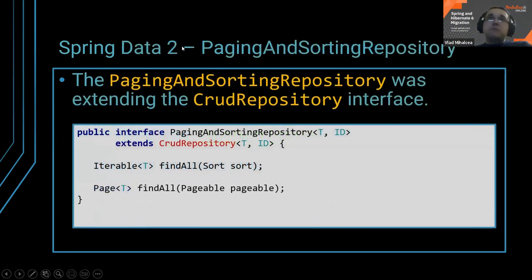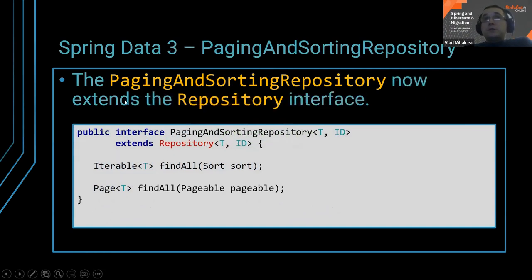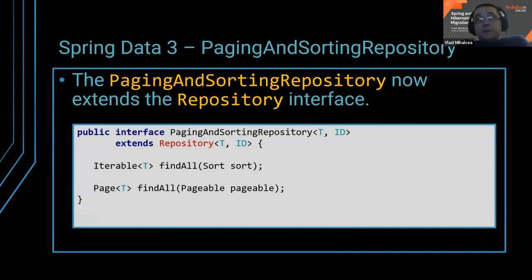A minor but important change: in Spring Data, the PagingAndSortingRepository used to extend CrudRepository. Now it only extends Repository. So you no longer have the methods that were previously available from CrudRepository. Keep that in mind.